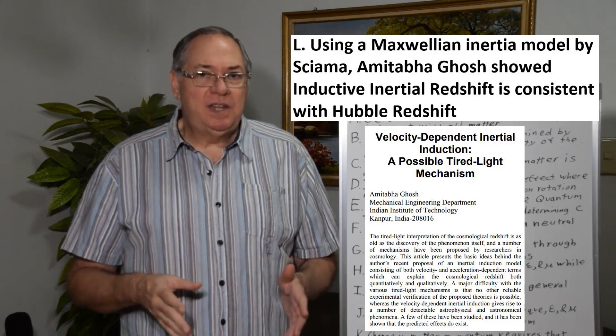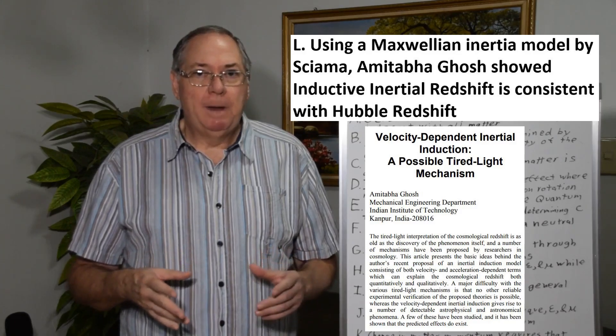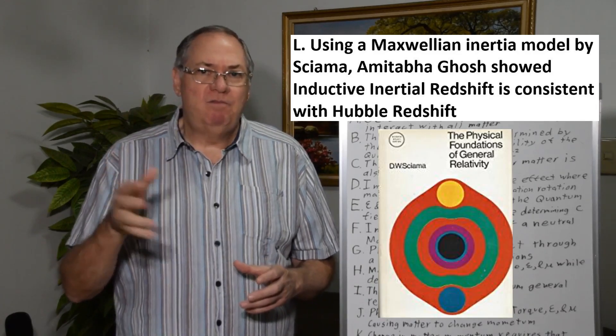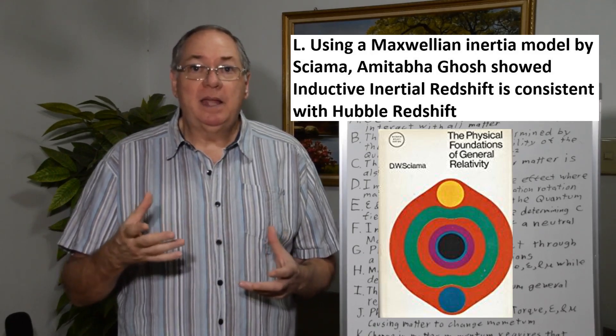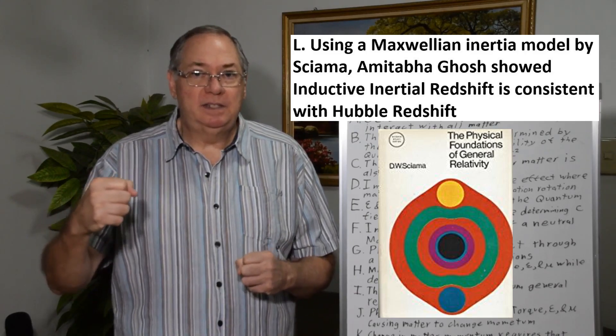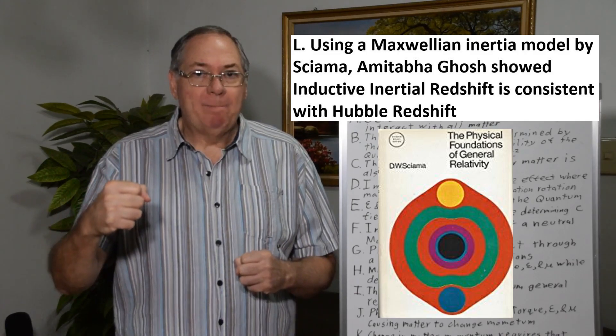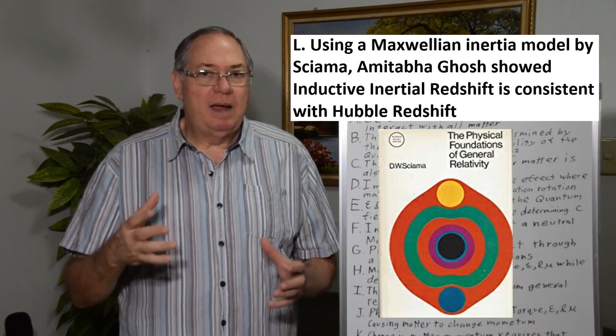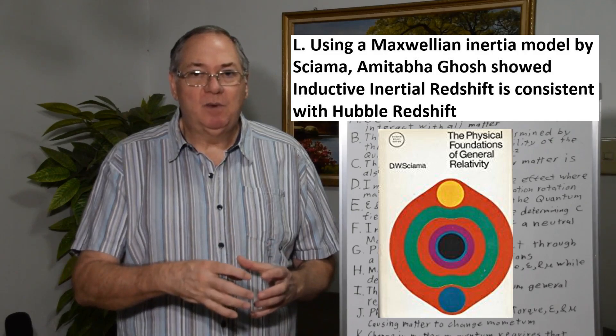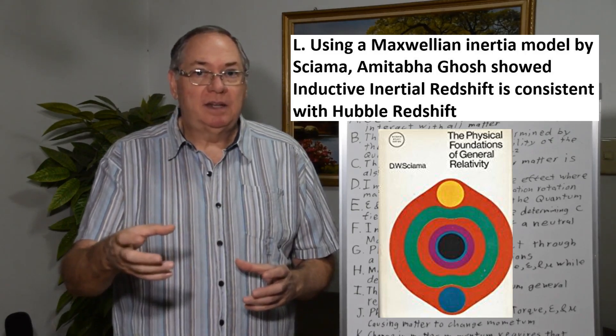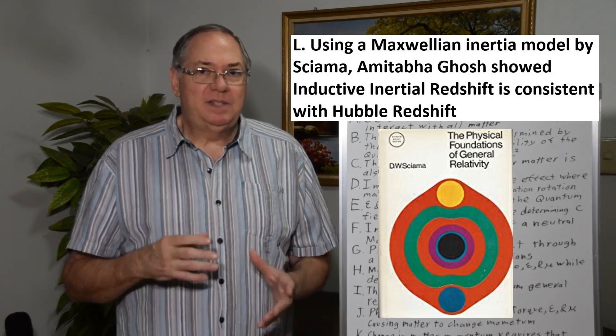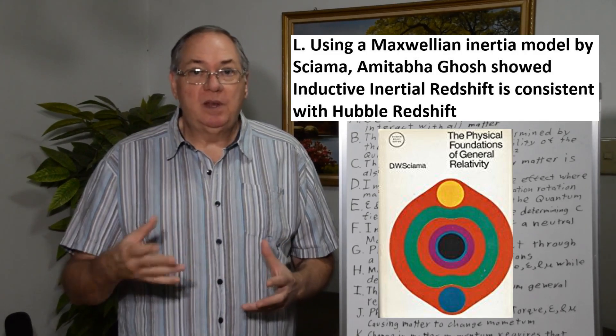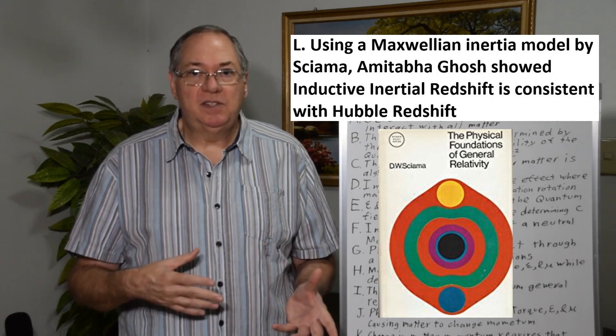And the thing about Sciama's model, it was a Machian model of inertia, where a body moving is interacting with all the matter in space, rather than with the quantum field, as I say. Because in the Machian model, there's no explanation for how the two bodies of matter are interacting in order to create inertia. So I put it a different way, where I say inertia is an interaction with the quantum field, which leads to a Machian effect related to redshift. But Sciama recognized that this type of interaction has a Maxwellian form to it in the way that matter and photons interact with each other.